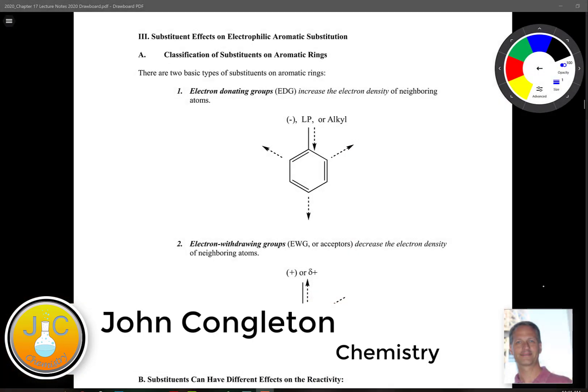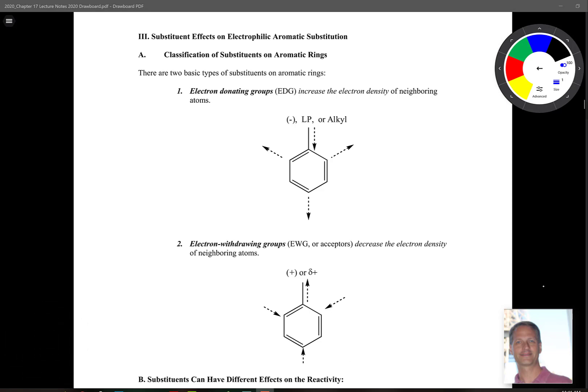Now, we saw the effect of having an alkyl group on a benzene ring and how that affected the reactivity. It turns out there can be other substituents on a ring other than just alkyl groups. So there's two basic categories. The first are electron donating groups. These increase the electron density of neighboring atoms. So here's your substituent. Your substituent will be an alkyl group, a substituent that has a lone pair on it, or a substituent that has a negative charge on it like an oxygen with a minus charge like phenoxide.